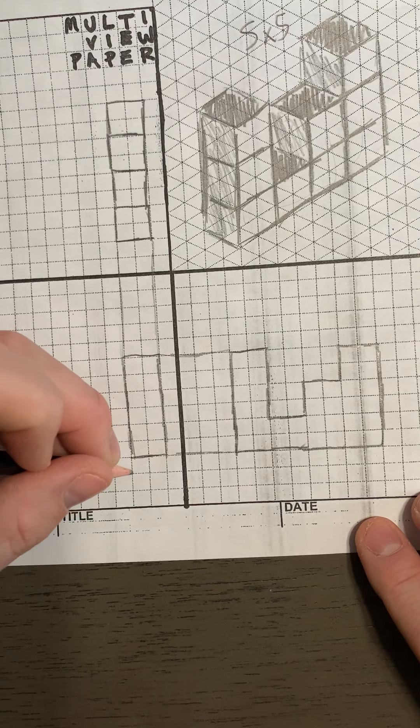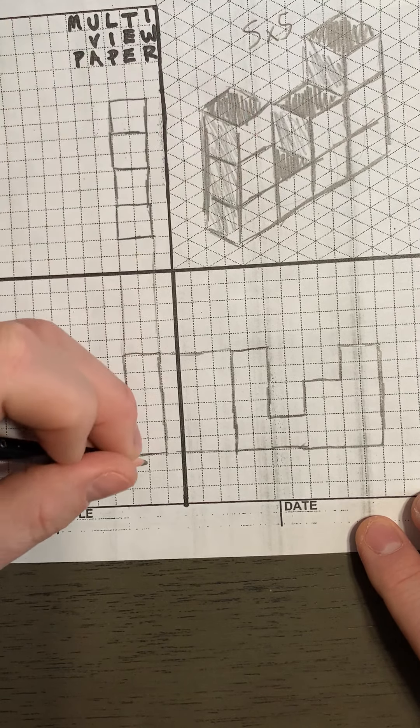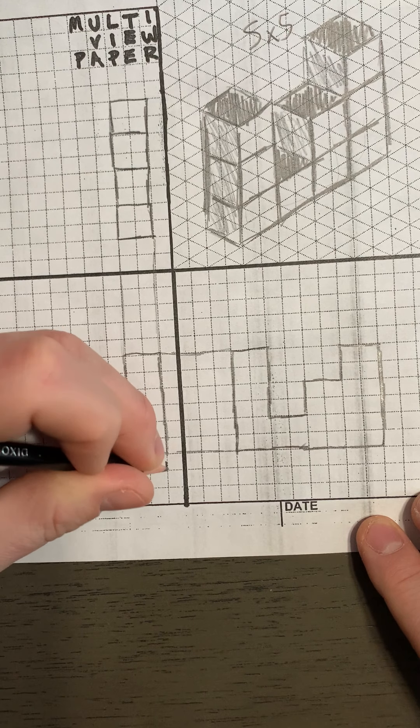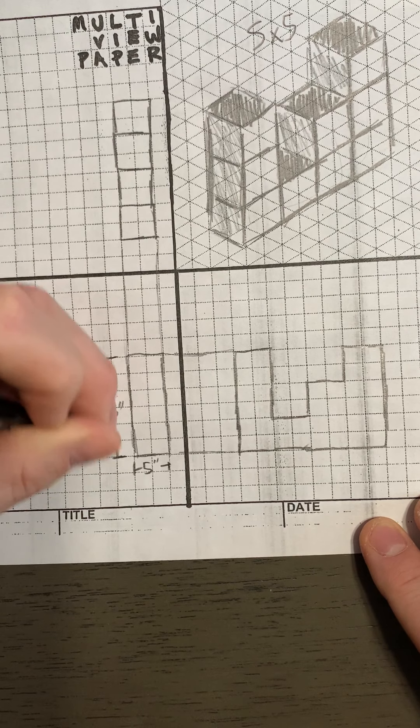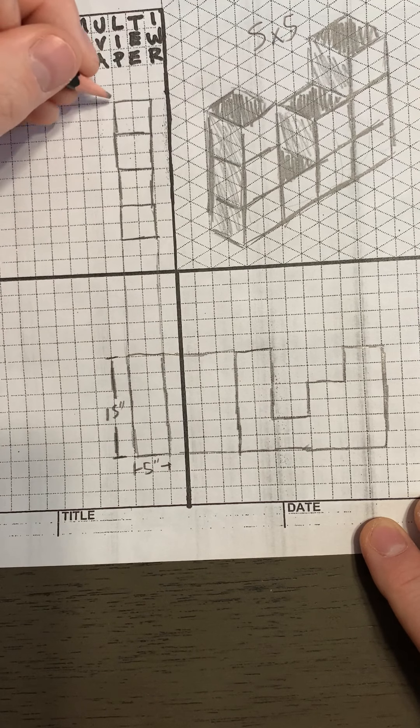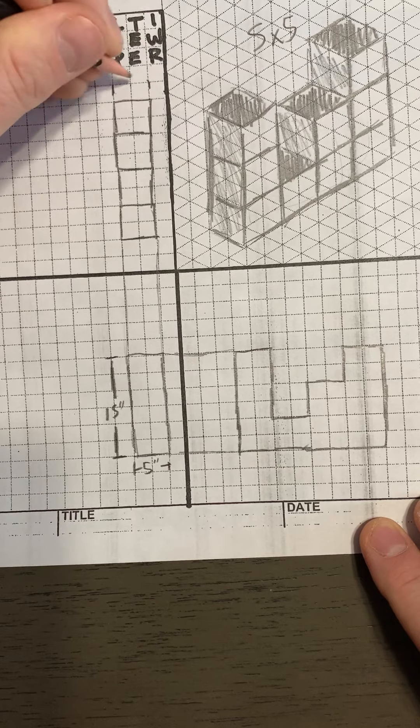As far as putting dimensions in, remember they're 5 by 5, so this would be 5 inches. This would be three cubes tall, so this is 15 inches. This is 5 inches.